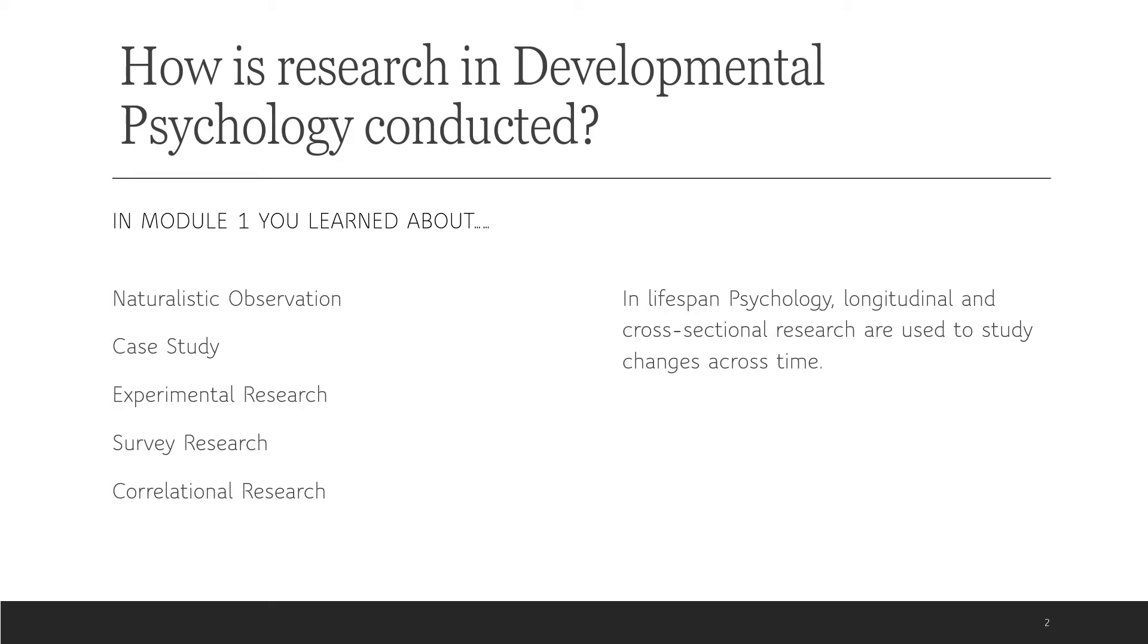You learned about experimental research. And if you'll remember, this is where we have random assignment into experimental and control groups. You learned about in this type of research, independent and dependent variables, and that this is the only method that allows us to really establish if there is a cause and effect relationship. You also learned about survey research and the importance of having a representative sample. You learned about when survey research can be very valuable and the types of information we might get from this type of research.